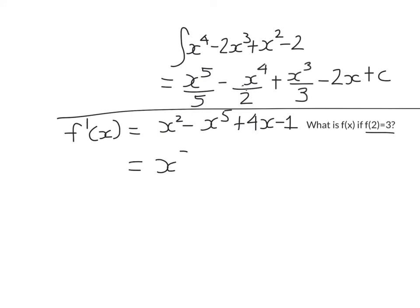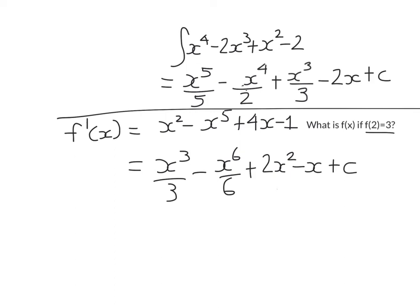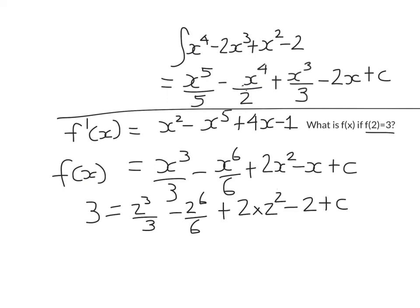The antiderivative of x squared: raise the power by one, divide by the new power. Similarly for the next term — keep the minus, raise the power by one, divide by the new power. Four divided by two is just two, so I write that as 2x squared. The antiderivative of minus one is just minus x, then add a constant. So this is my f(x). I'm told f(2) equals 3, so substituting x equals 2 gives three equals minus two plus c. Adding two to both sides gives c equals five. So the original function has the constant five.